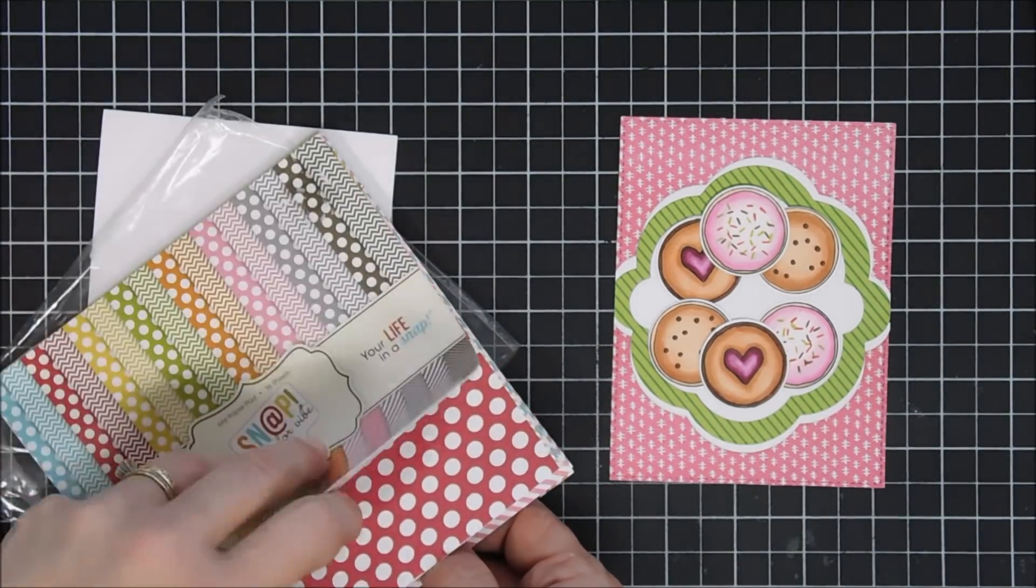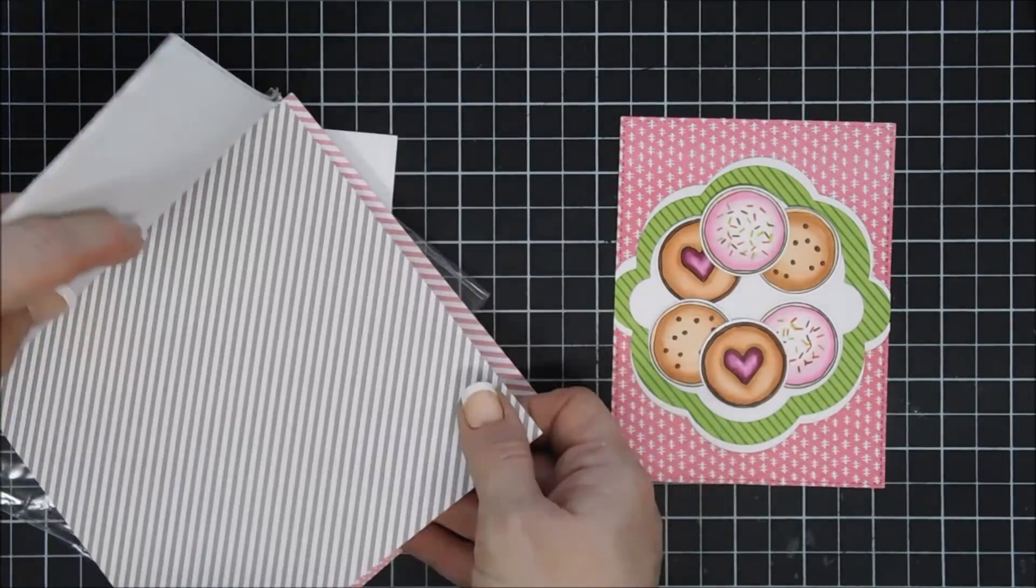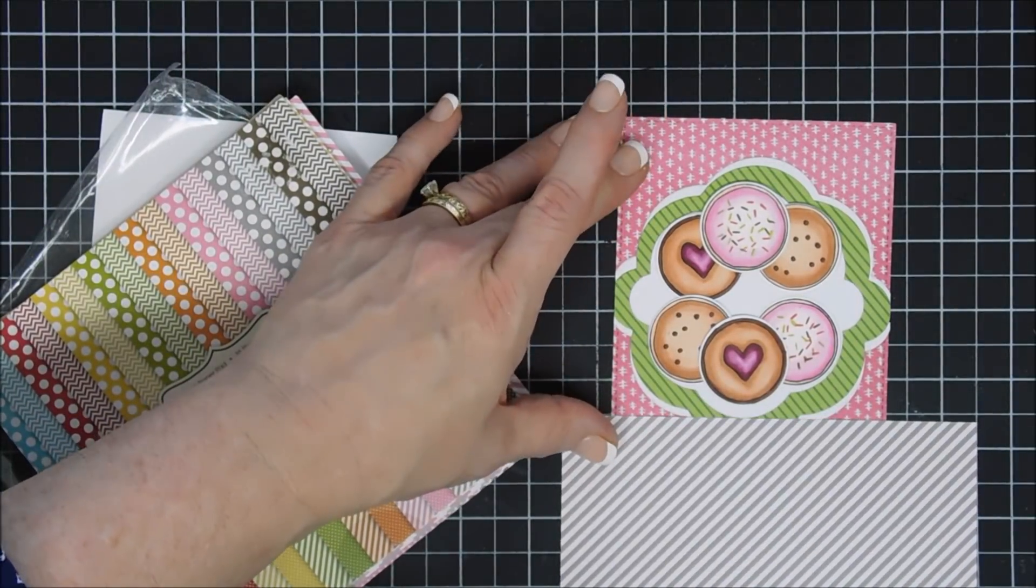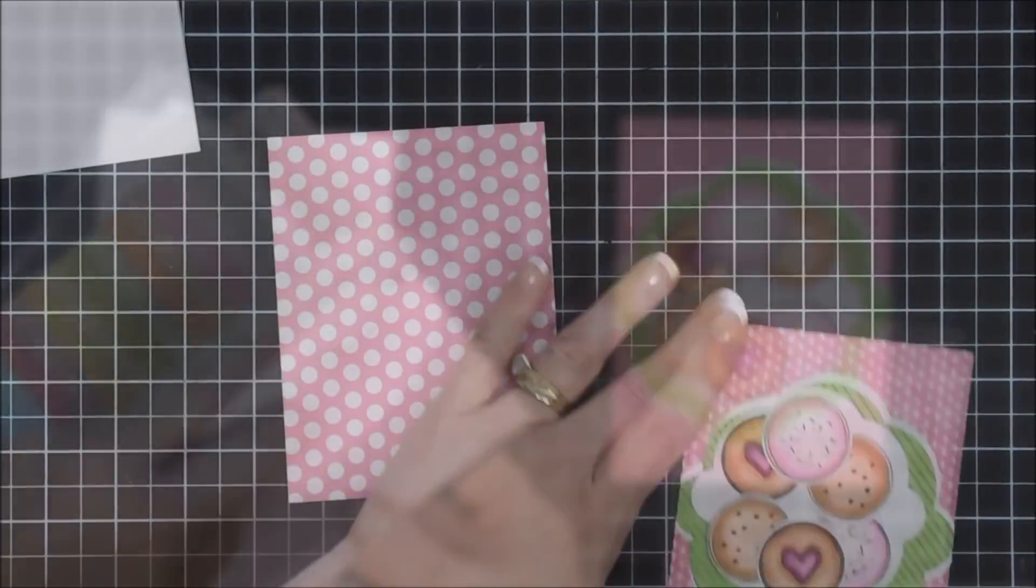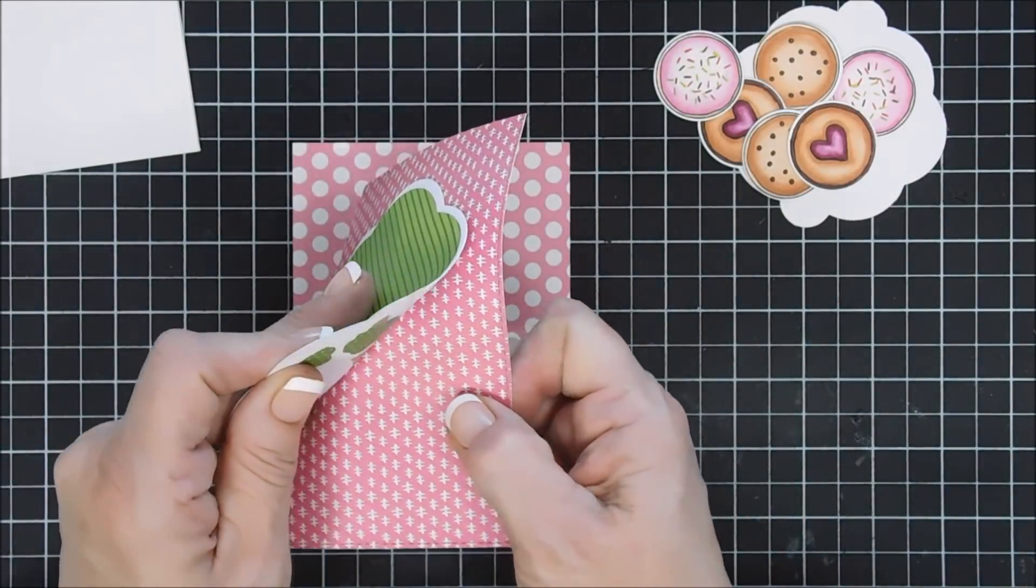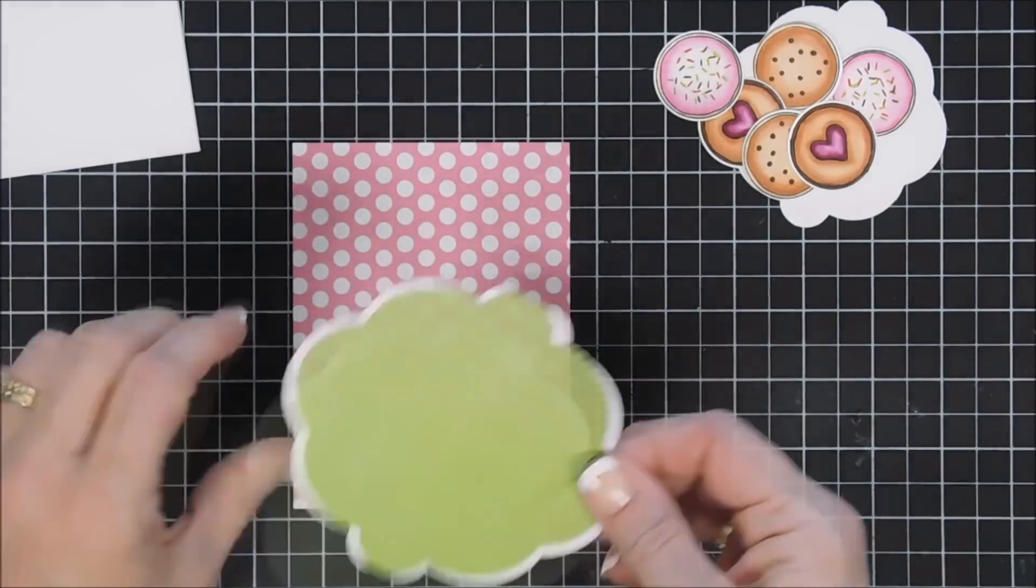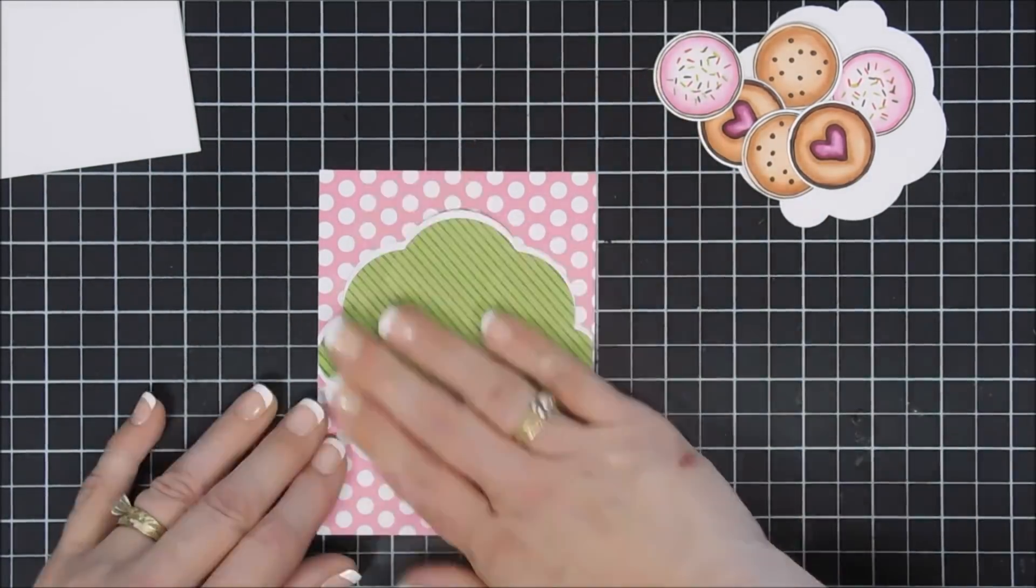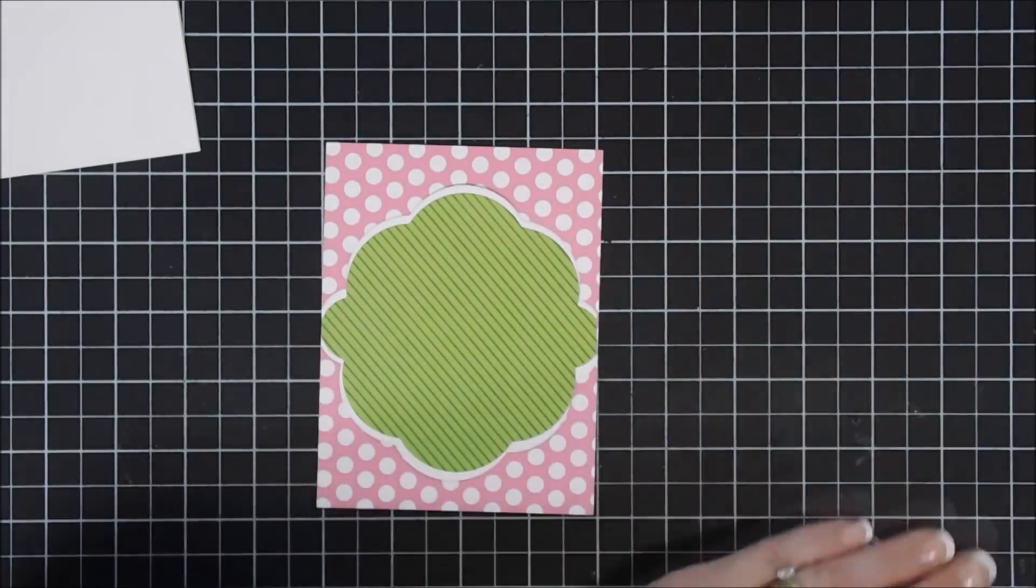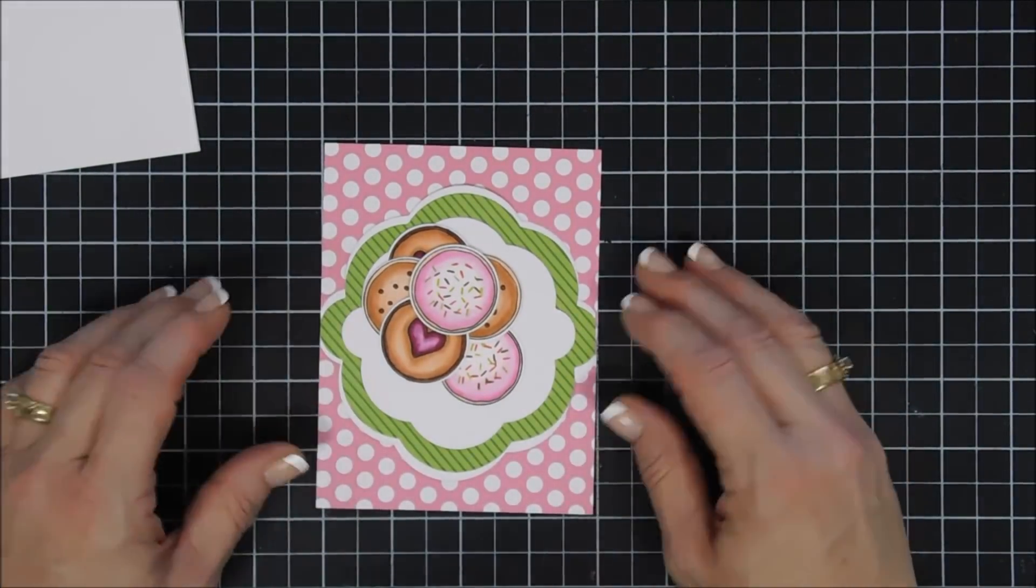I just thought it would go a lot nicer with my background, and then the color kind of went a little bit better too. So I'm going to remove my old paper, put the new paper down. It's the same panel size and I was happier with this outcome. I thought it was more fun. Since we're making a cookie card, I thought we'd make it nice and cheery.